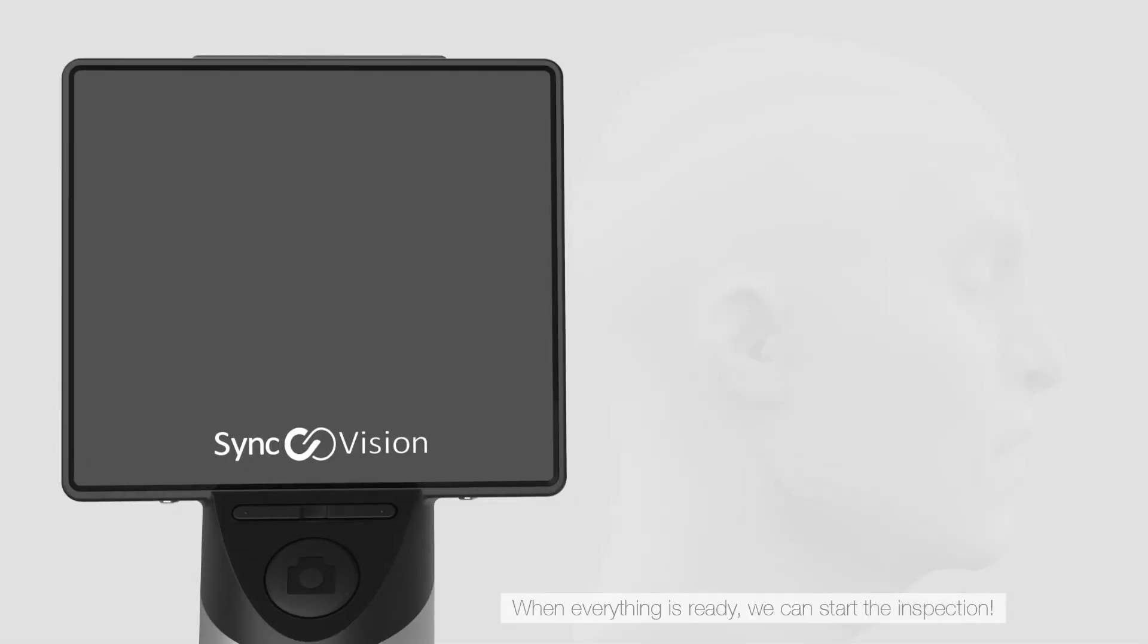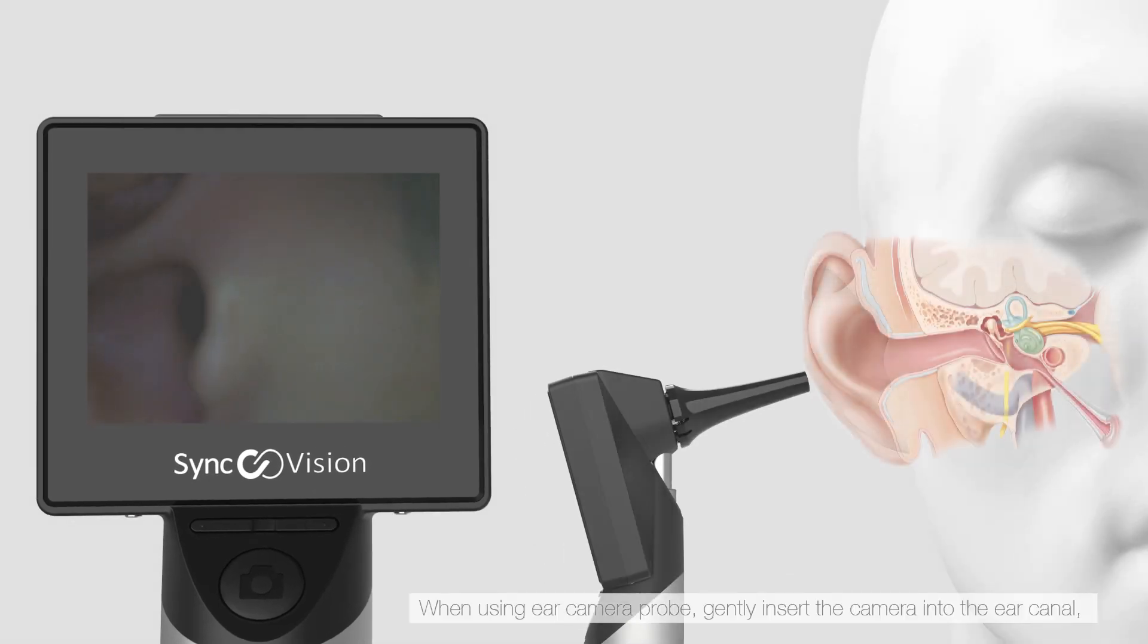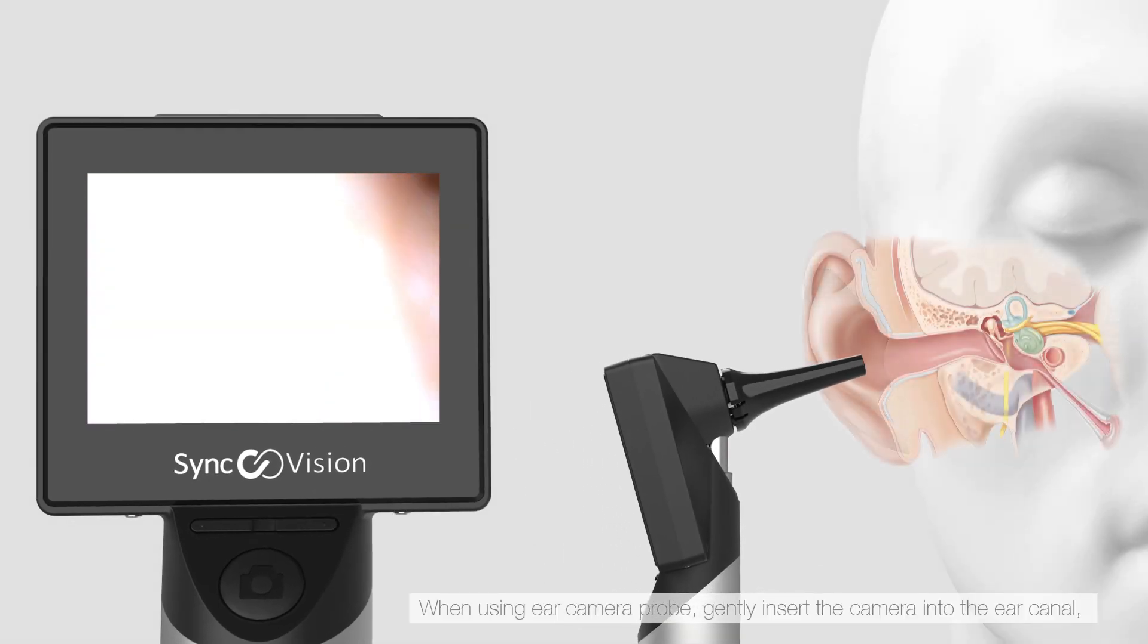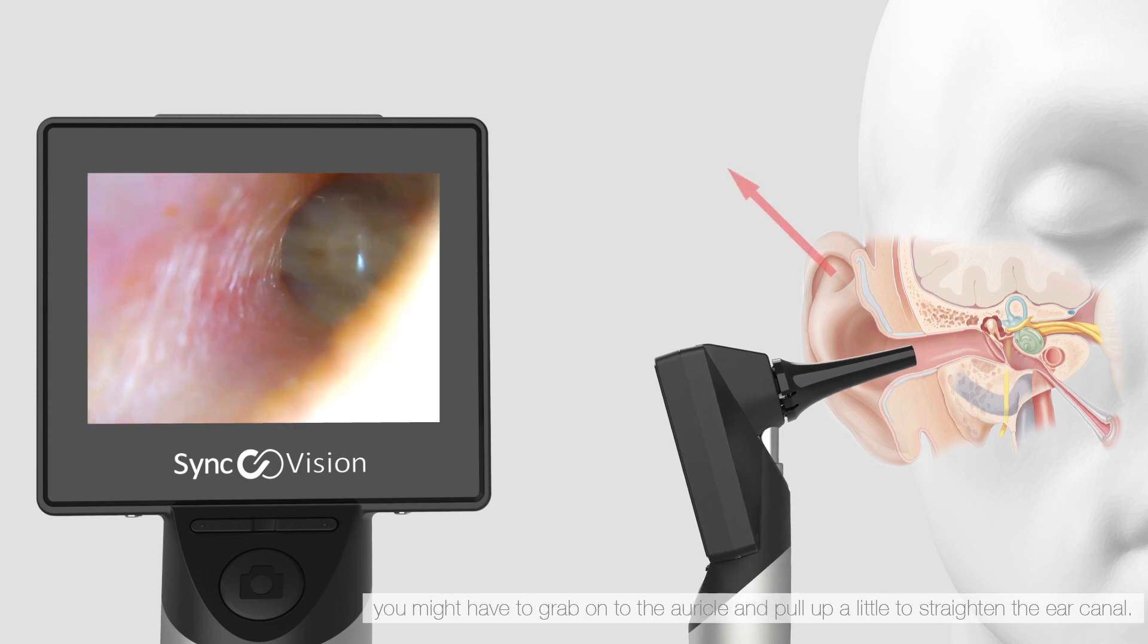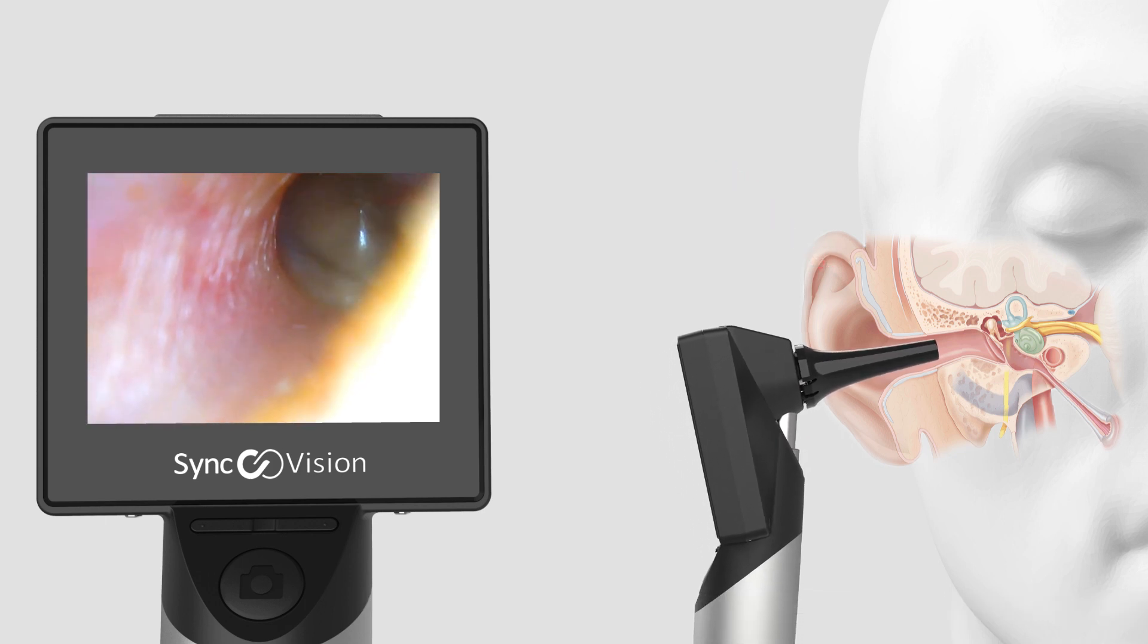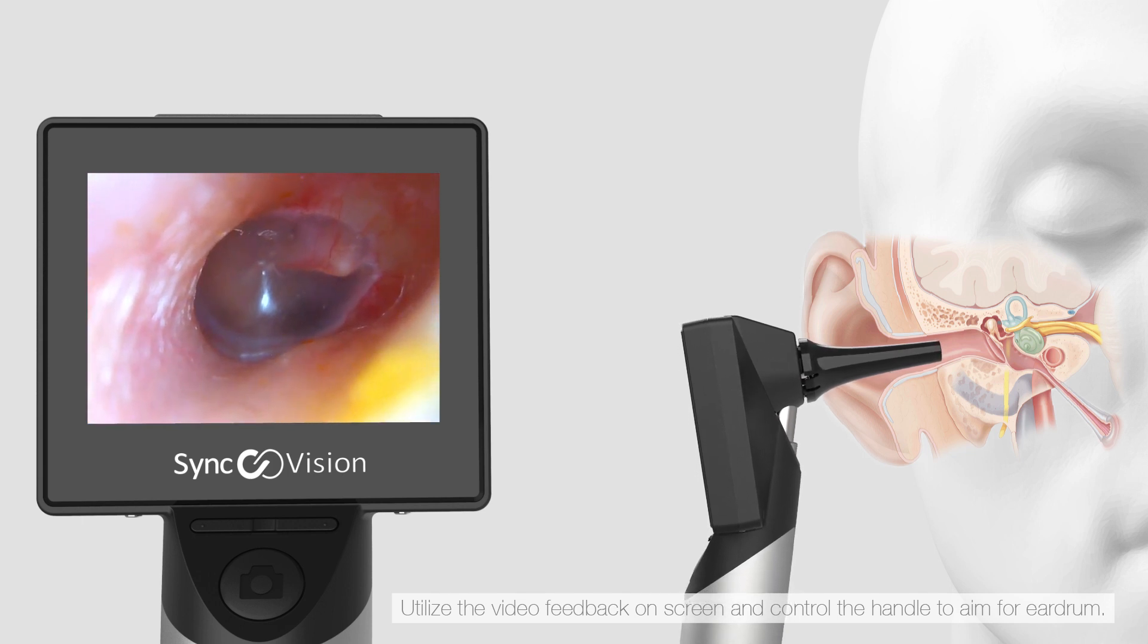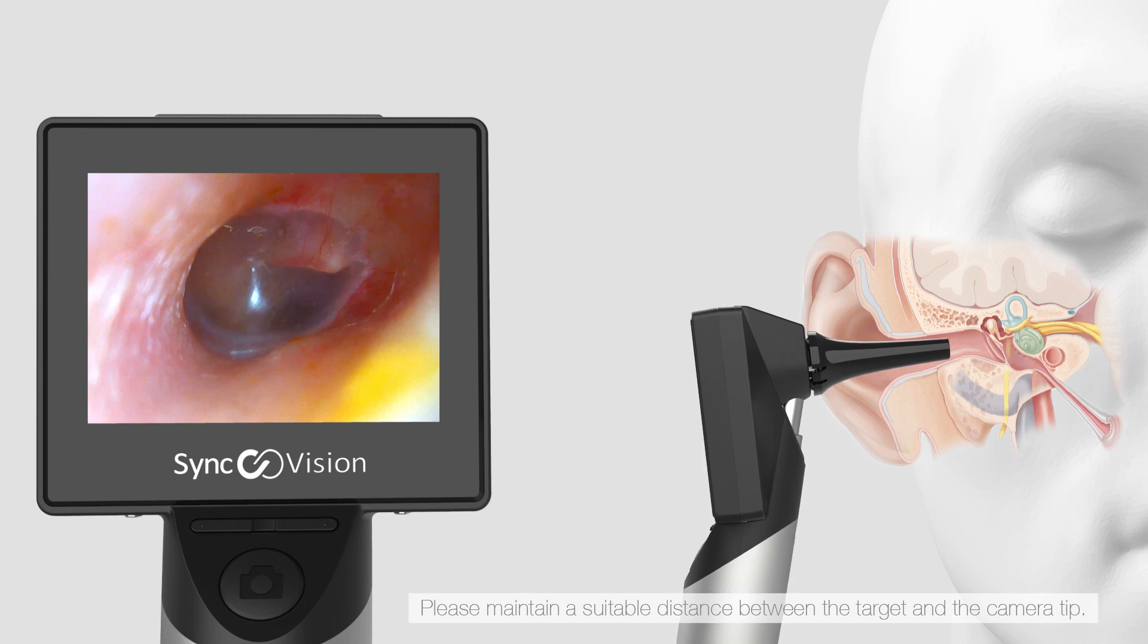When everything is ready, we can start the inspection. When using ear camera probe, gently insert the camera into the ear canal. You might have to grab onto the auricle and pull up a little to straighten the ear canal. Utilize the video feedback on screen and control the handle to aim for eardrum. Please maintain a suitable distance between the target and the camera tip.